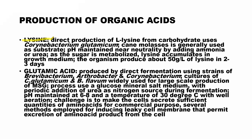The first amino acid is lysine. For direct production of L-lysine, we use the organism Corynebacterium glutamicum. Cane molasses is generally used as the substrate. pH is maintained near neutrality by adding ammonia or urea. As the sugar is metabolized, lysine accumulates in the growth medium. The organism produces about 50 grams per liter of lysine in two to three days.